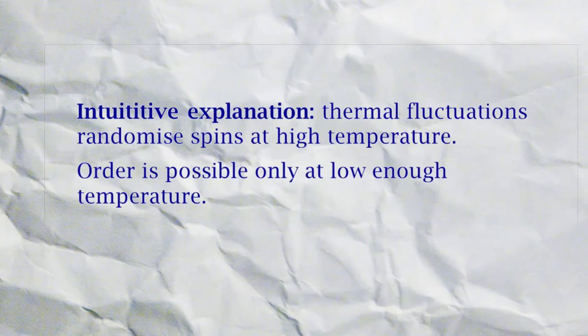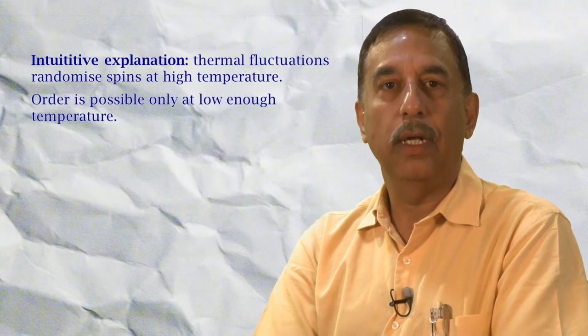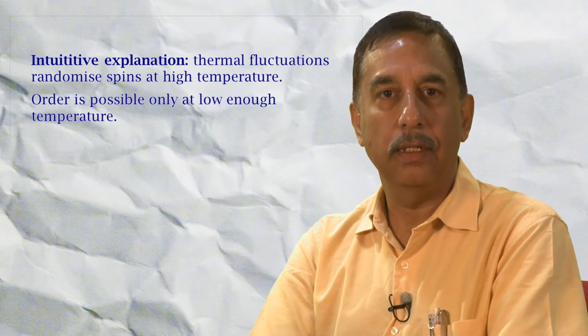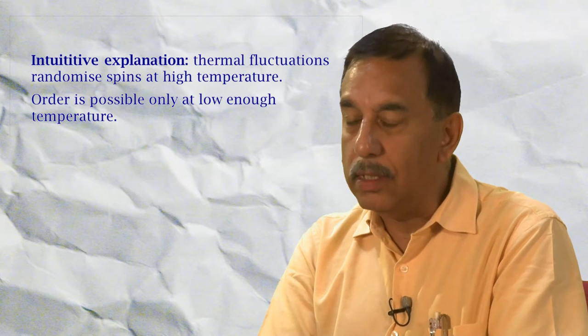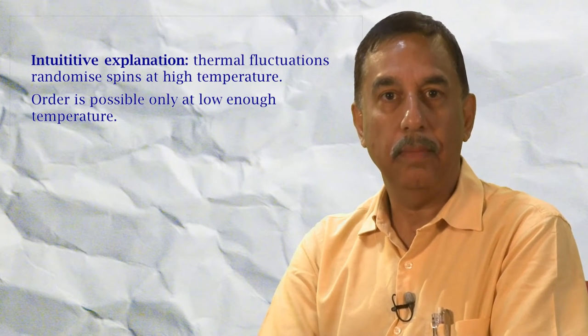The intuitive explanation for this is quite simple. Thermal fluctuations at high temperatures tend to disorder and randomize the spins, while at low temperatures it is favorable for the spins to minimize their energy by lining up together. This is something very familiar to us when we handle ordinary magnets.